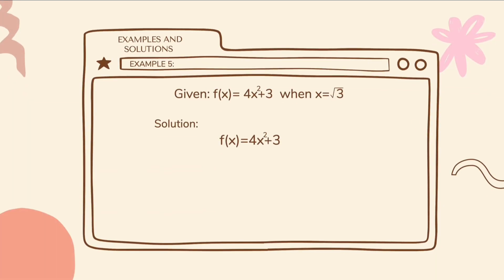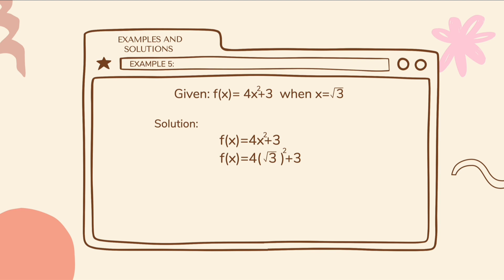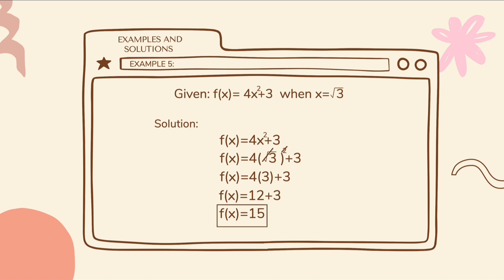Example number 5. For the fifth example, we have the given f of x is equal to 4x squared plus 3, when x is equal to the square root of 3. First, we substitute the square root of 3 to all x values in the equation. So we have f of x is equal to 4 times the square root of 3 squared plus 3. Then we simplify. We can simply cancel out the square root symbol and the square, since they are the inverse of each other. Thus, we have f of x is equal to 4 times 3 plus 3. 4 times 3 is equal to 12. 12 plus 3 is equal to 15. So our final answer is f of x is equal to 15.